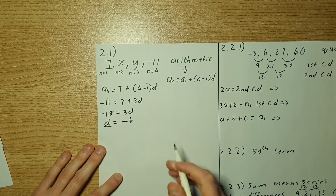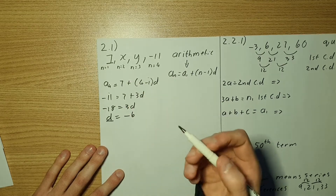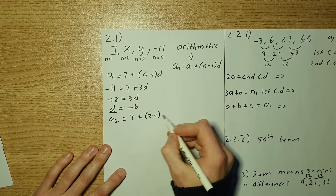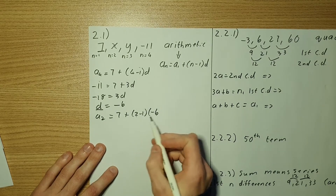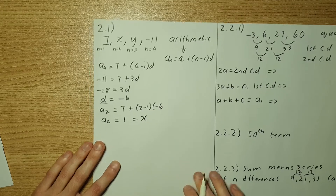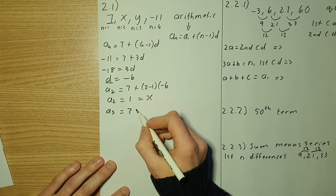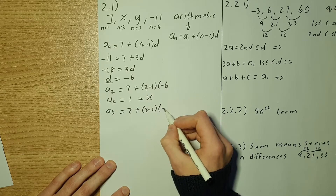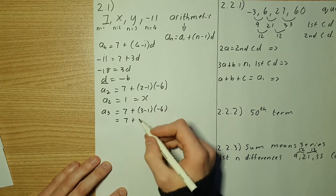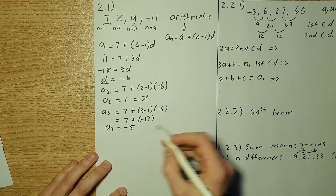Now that we have the common difference d equals negative 6, we can find x and y using the formula substituting n equals 2 and n equals 3. So a₂ equals 7 plus (2 minus 1) times negative 6, giving 7 minus 6 which equals 1, so x equals 1. For y, a₃ equals 7 plus (3 minus 1) times negative 6, giving 7 minus 12 equals negative 5, so y equals negative 5.